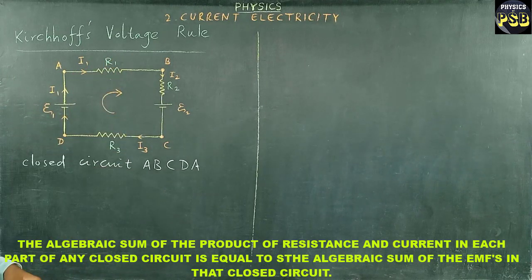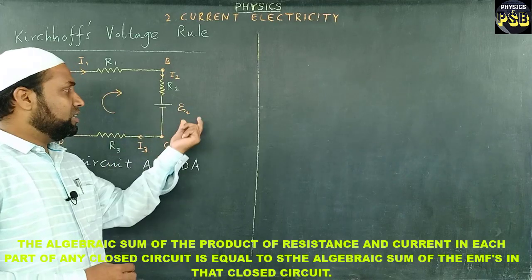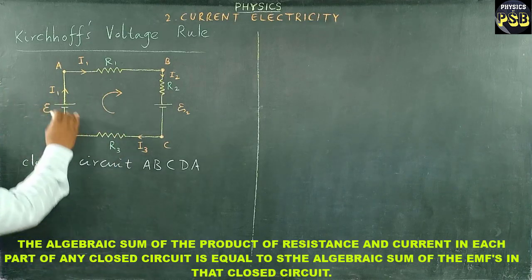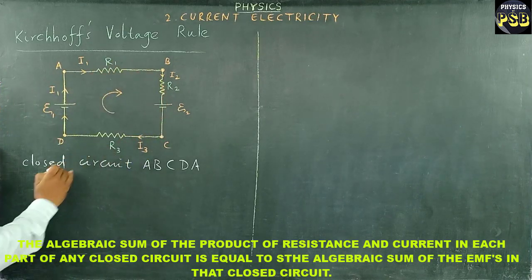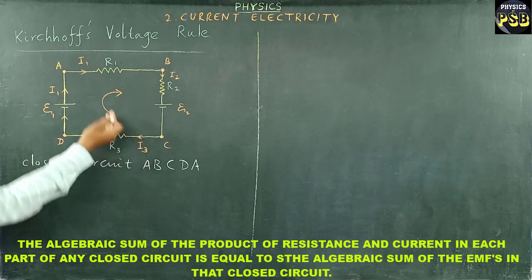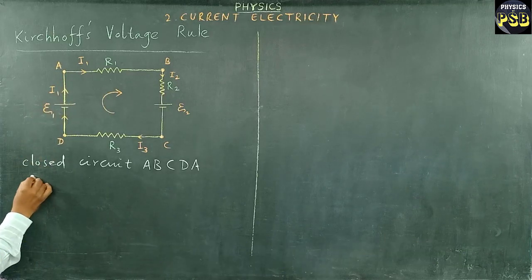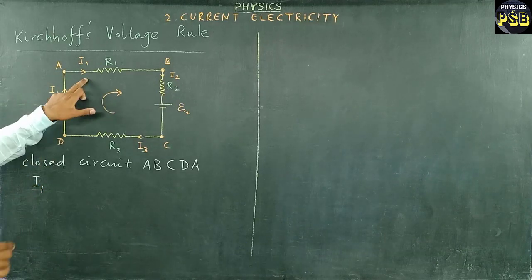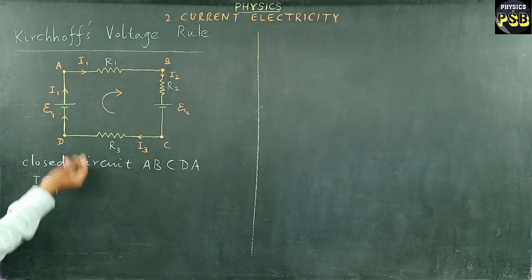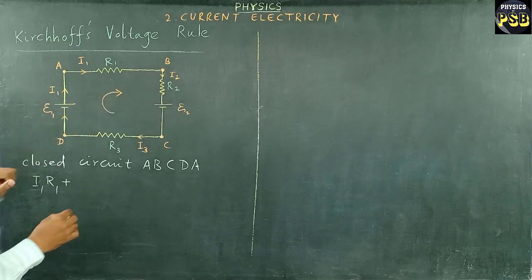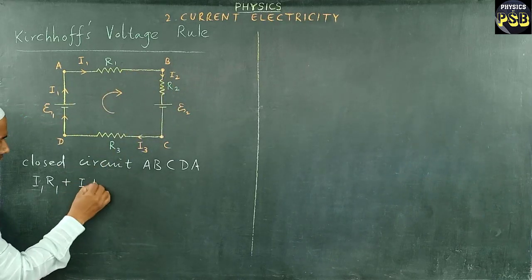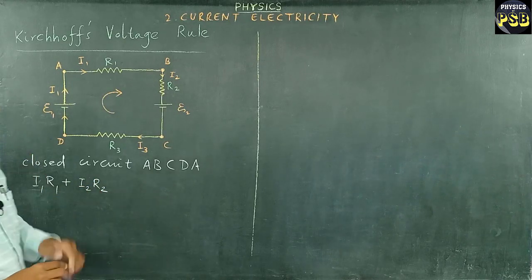So I will add all products of current and resistance. So I will start from A. Here the current is I1, multiply this with the resistance in that part of the circuit, which is R1. I add this with the product I2 and R2. Then one thing I forgot to mention here.